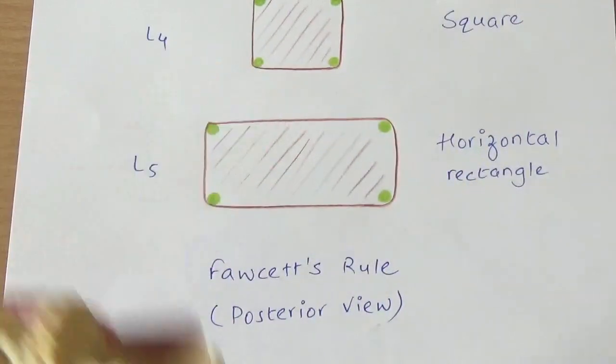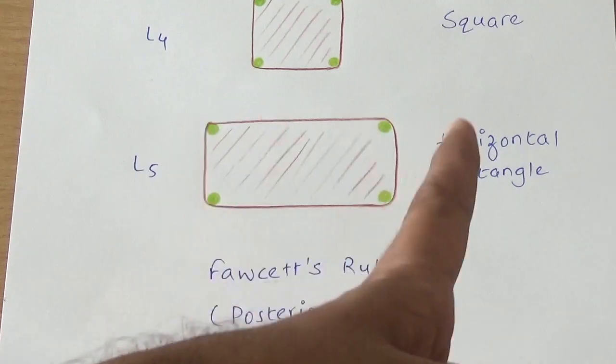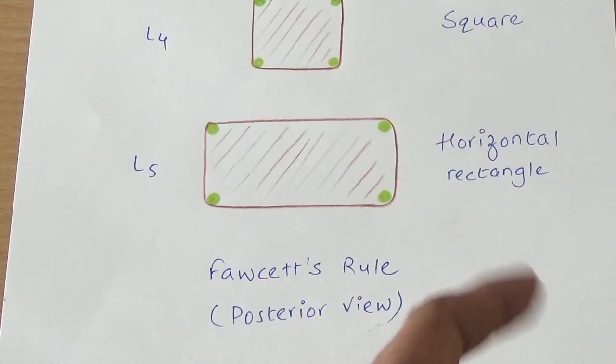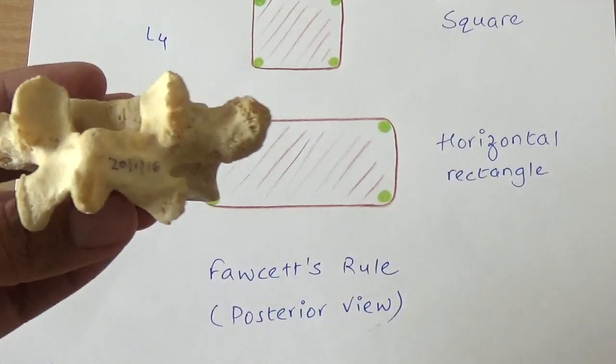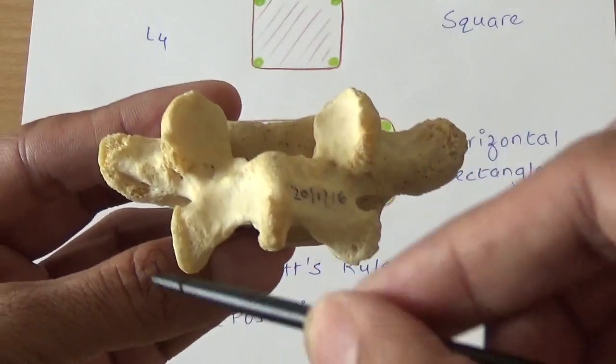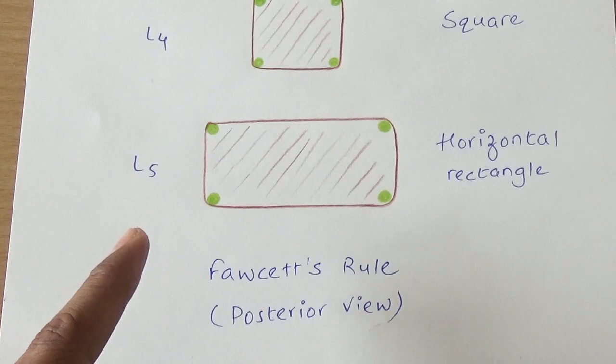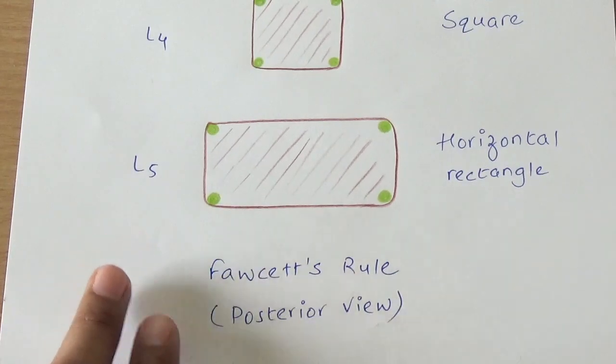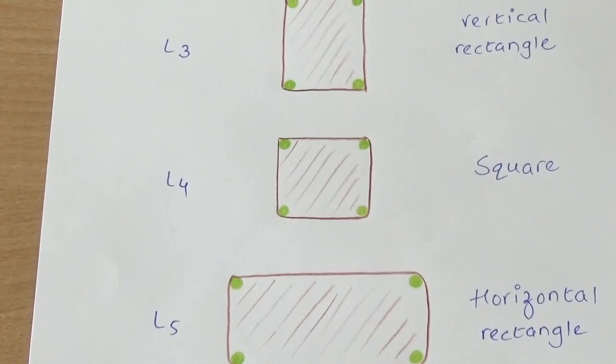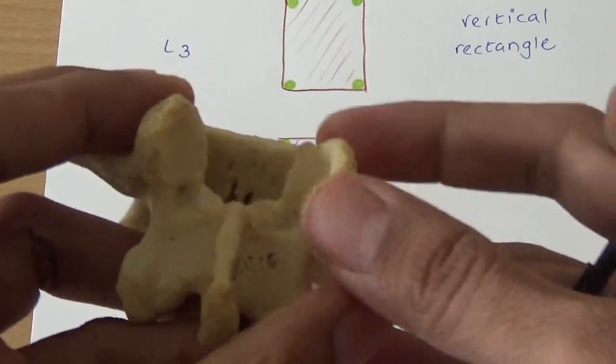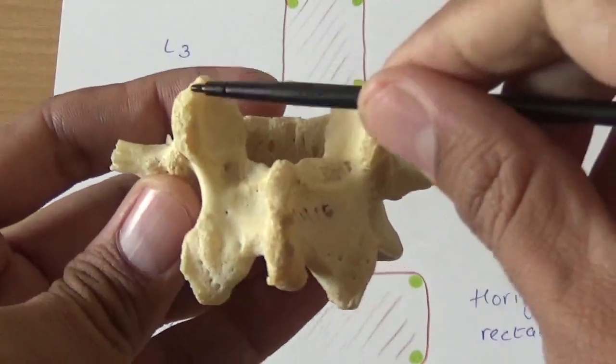In case of L5, the imaginary shape will become a horizontal rectangle. Over here you can clearly make out while joining these four it will become a horizontal rectangle, so that will be L5. Similarly, in case of L4 it will become a square. See, over here this is L4 and you can clearly imagine formation of a square, so this will be L4.